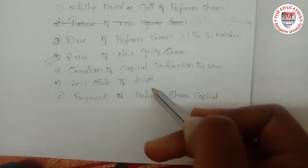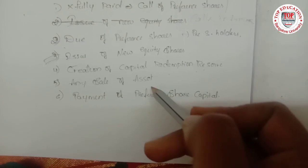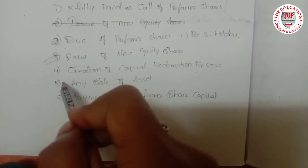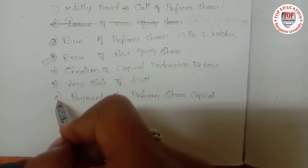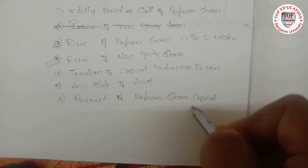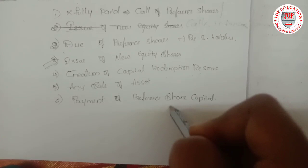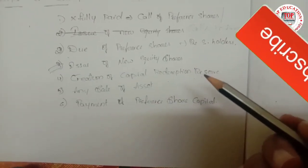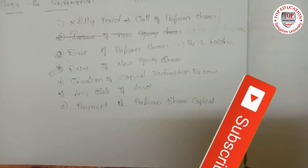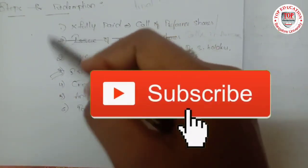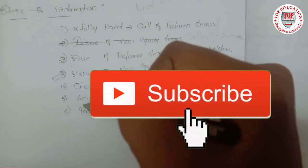The fifth step is if any sale of assets is being done for the redemption of preference share capital to the preference shareholders. These are the steps we are going to see in the upcoming problems.